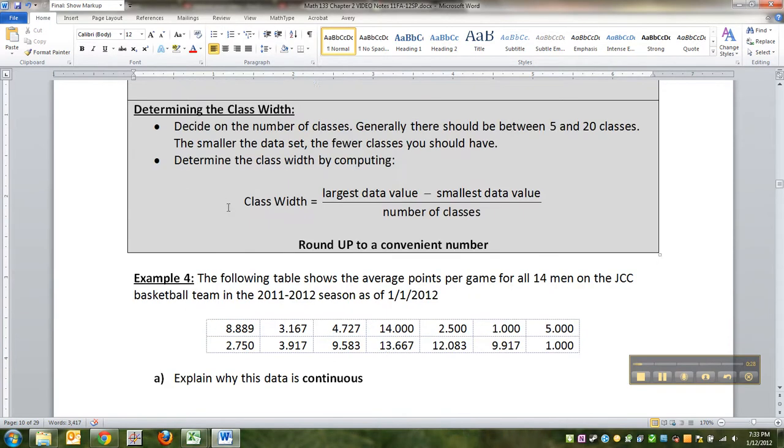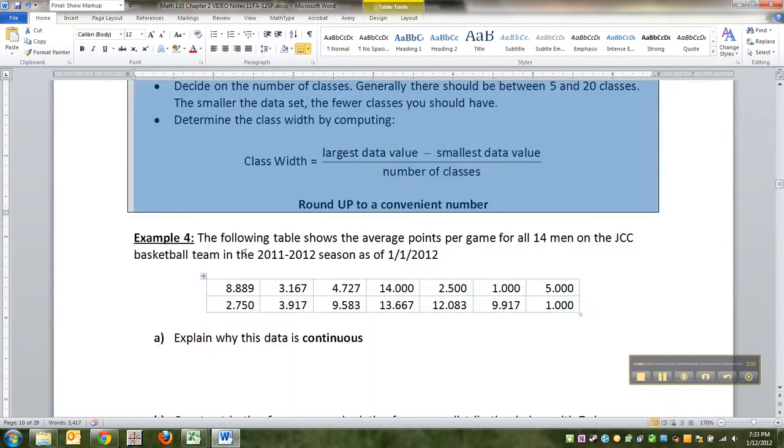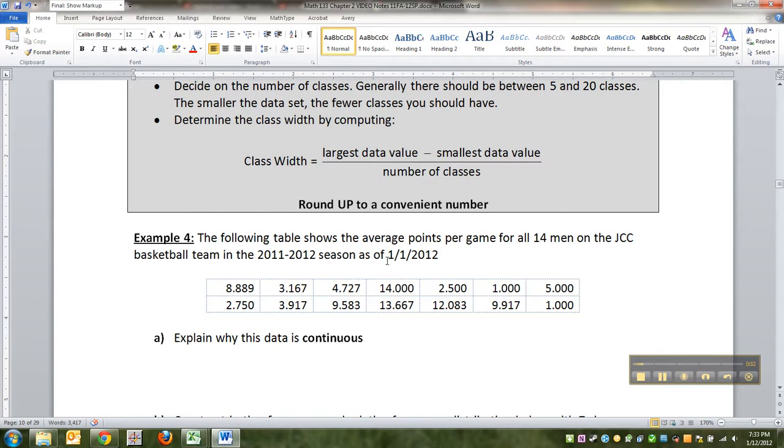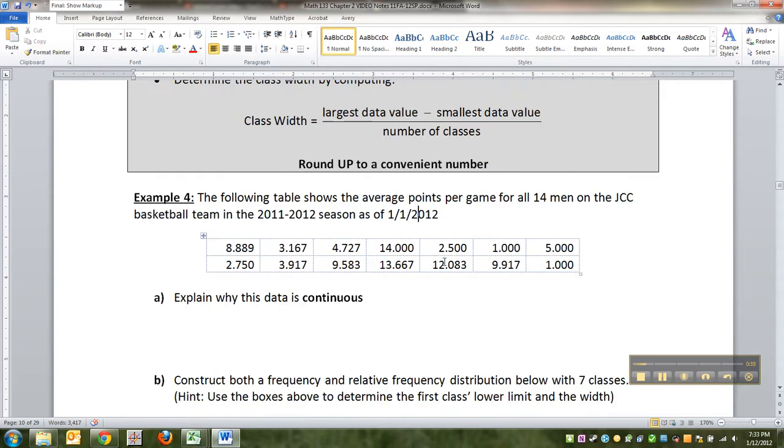So I have here instructions, and we'll get into those in a second. But the following table shows the average points per game for all 14 men on the JCC basketball team in the 2011 to 2012 season as of January 1st, 2012. So first of all, why is this data continuous?